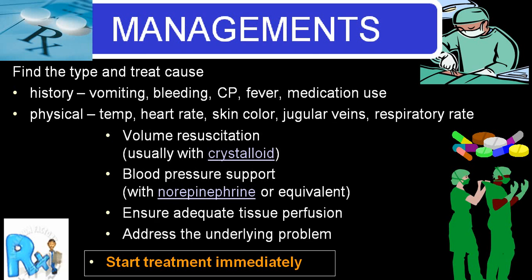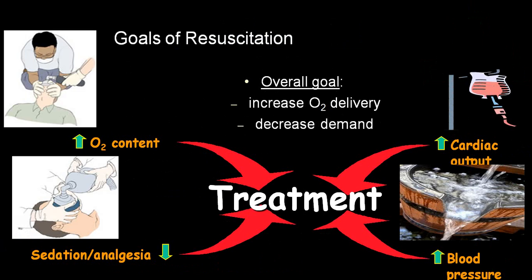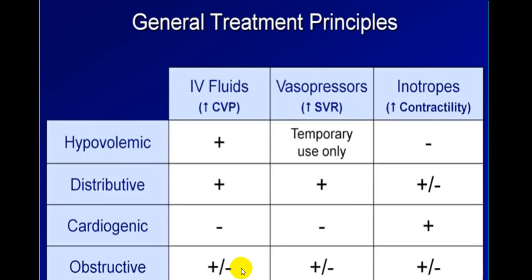First is stabilization, then after stabilization go for increased oxygenation, increased cardiac output, increased blood pressure, and if the person has pain, reduce it by analgesics or sedation. In hypovolemic shock: IV fluids required. In distributive shock: IV fluid with vasopressors, and possibly inotropes. In cardiogenic shock: only inotropes treatment. In obstructive shock: depending on cause, may require IV fluids, vasopressors, or inotropes.